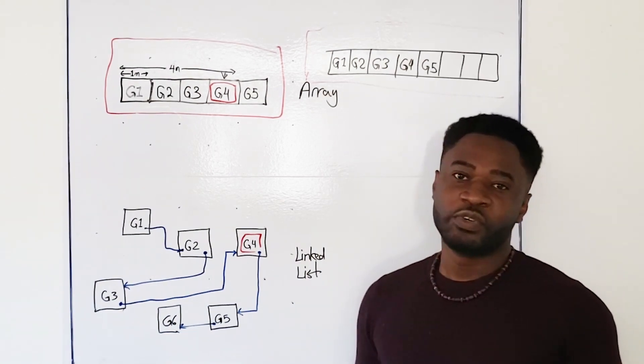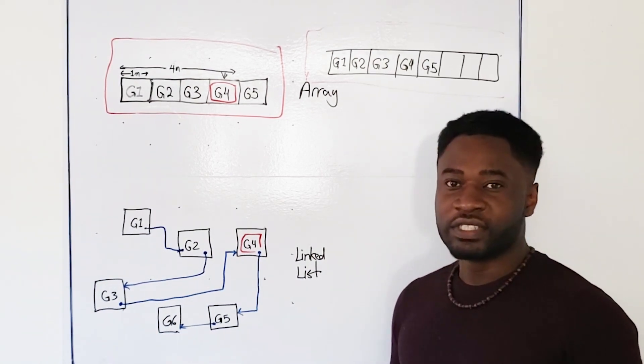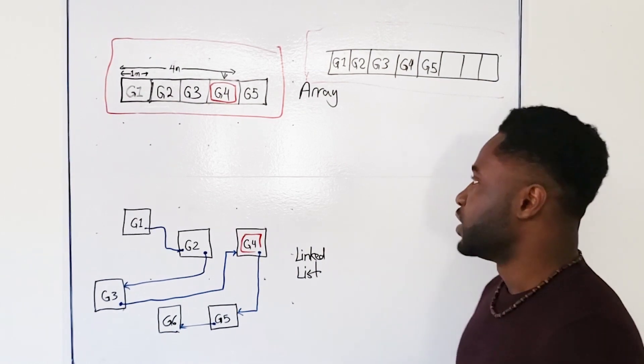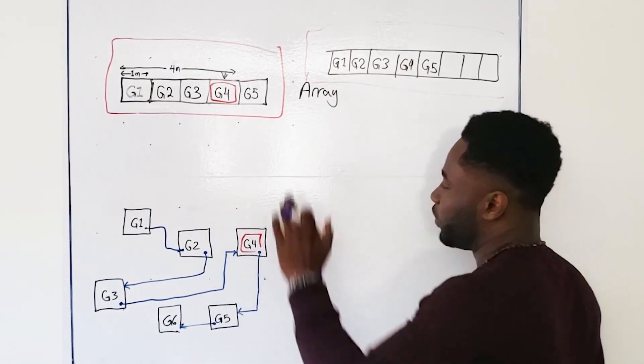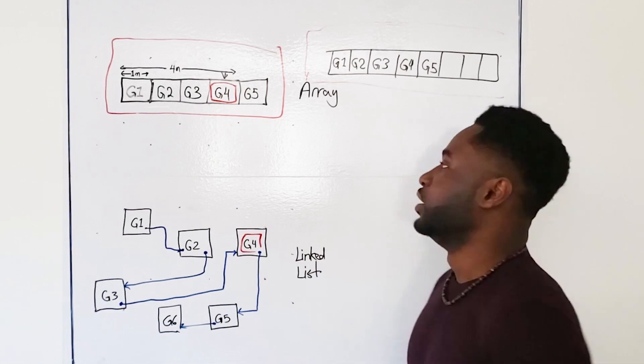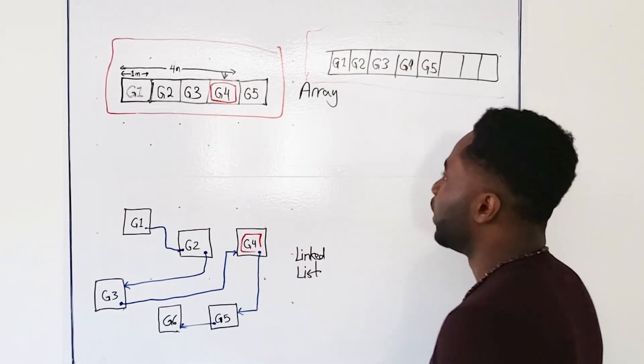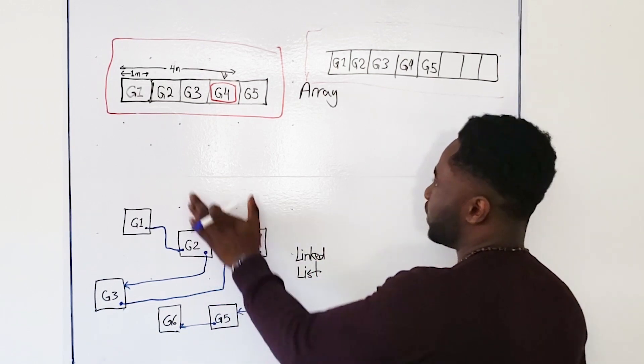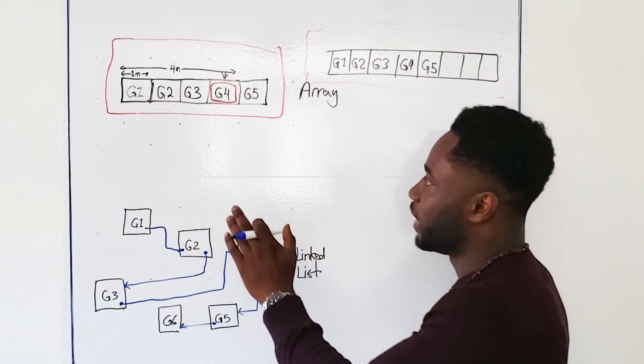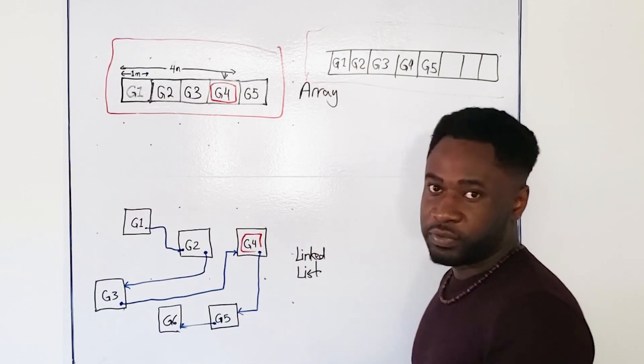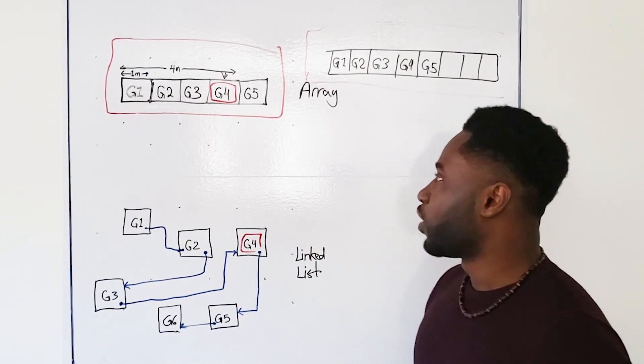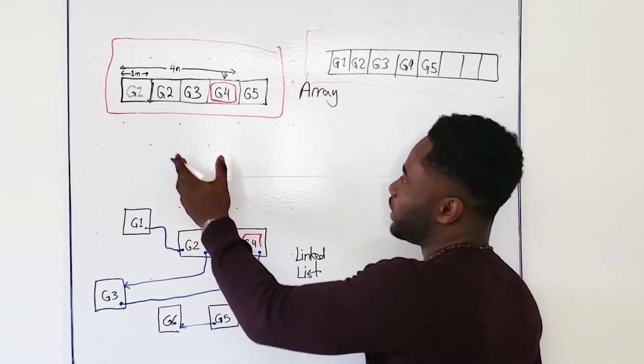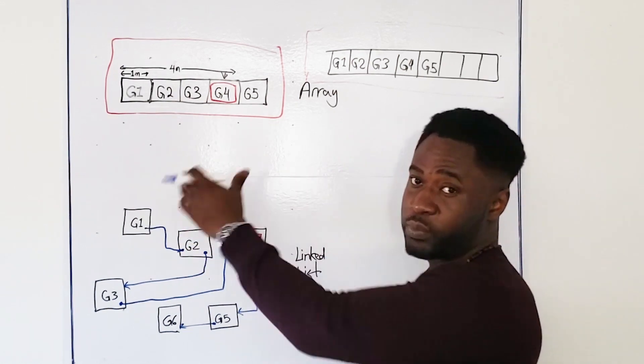So hopefully the story analogy made the differences a little bit more clear. But just to clarify, with an array, the advantage here is that we have fast searching. However, the disadvantage is that it's limited or it's not mutable or changeable. So when we create an array, however many spaces we specify is what we are stuck with.